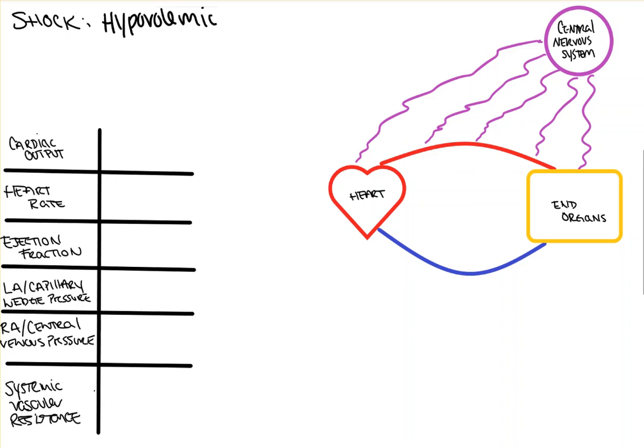Now, the problem in hypovolemic shock is really here and here, in that your overall blood volume is greatly decreased. As a result, there's a decreased preload to the heart, and your cardiac output goes down as a function of decreased stroke volume.